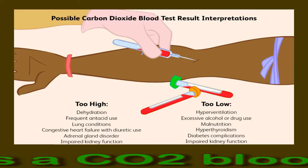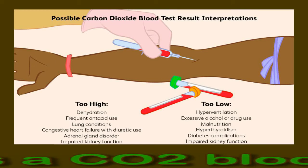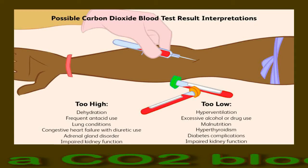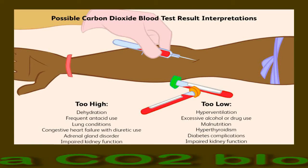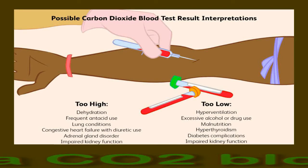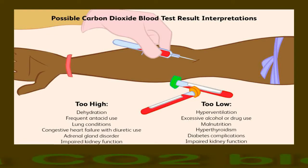The test procedure usually takes around two to five minutes. A nurse or healthcare professional will make a tiny prick in the person's arm and collect blood in a test tube to send away for testing. It is normal to experience a slight feeling of discomfort from where the nurse drew the blood, but this is temporary and will resolve on its own.